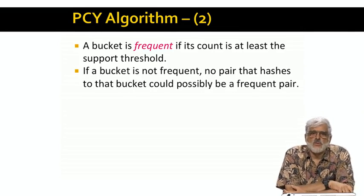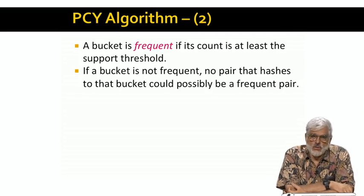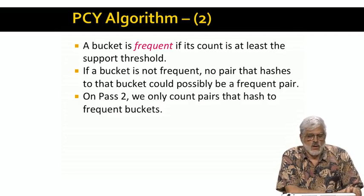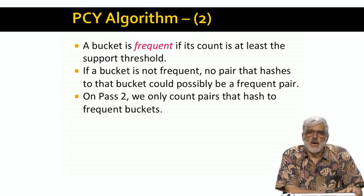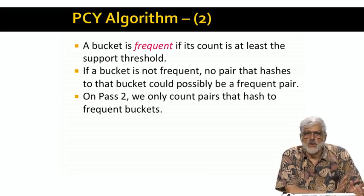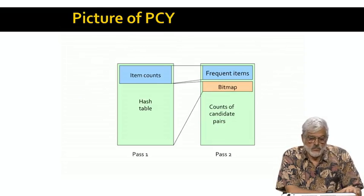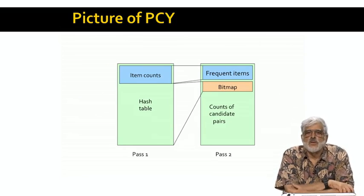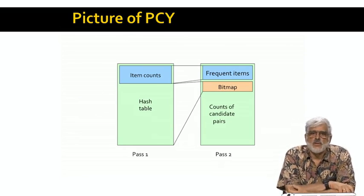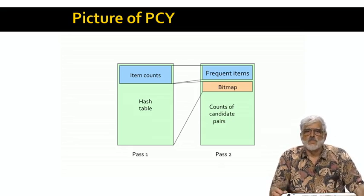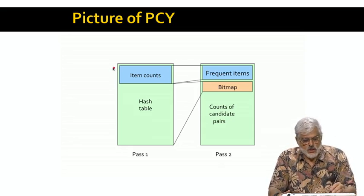But in the opposite case, we win. If a bucket is not frequent, then no pair that hashes to it could possibly be frequent. So on the second pass, we only need to count pairs that hash to a frequent bucket. And of course, the usual A Priori trick works too — we only have to count a pair if both its members are frequent items.